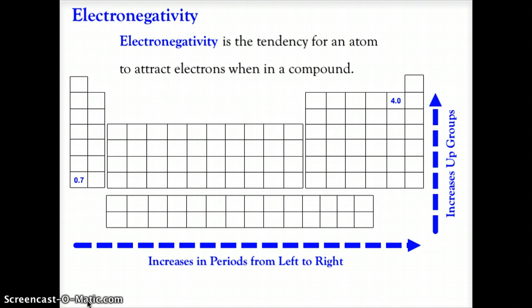So our first trend that we're going to look at is the trend for electronegativity. Electronegativity is the tendency of an atom to attract an electron when in a compound. Basically what we're looking at is what is the possibility that this atom is going to take on an electron in order to fill the rule of octet, which we've spoken of before.